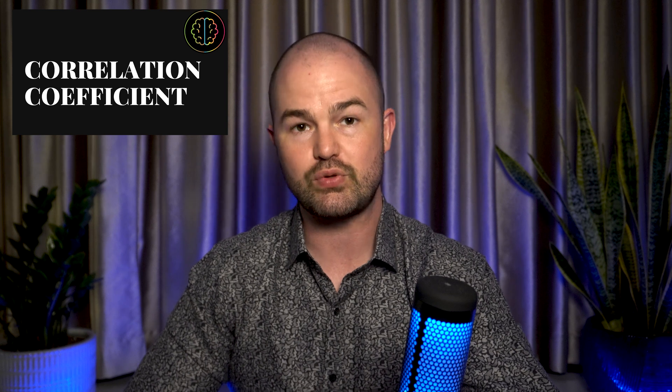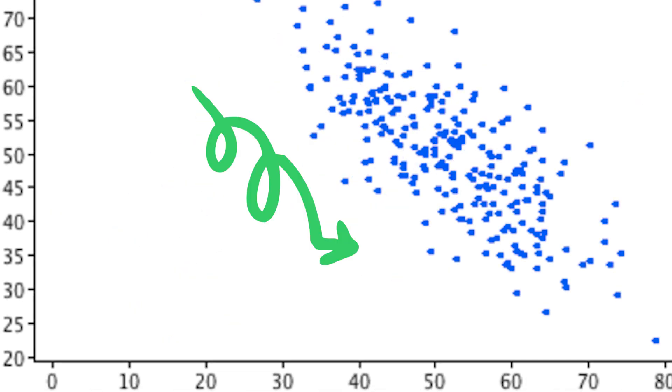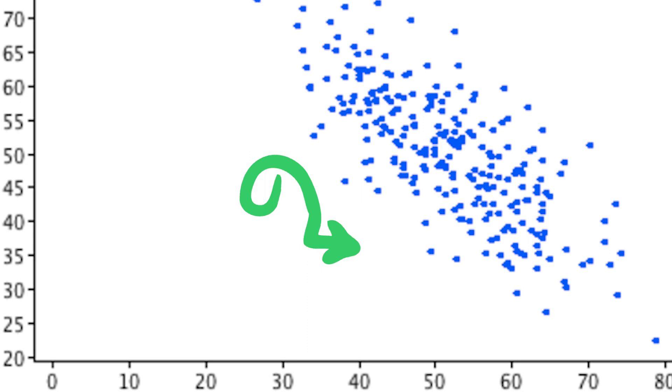In a previous video, we talked about correlations. A correlation coefficient is a measure that tells you the strength and direction of a relationship between two variables. It's represented with the letter R, and it can range from negative one to positive one, where negative one indicates a very strong negative correlation and positive one indicates a very strong positive correlation. Zero means there's no relationship between the variables. A positive correlation means that as one variable goes up, the other tends to go up as well. A negative correlation means that as one variable increases, the other decreases.